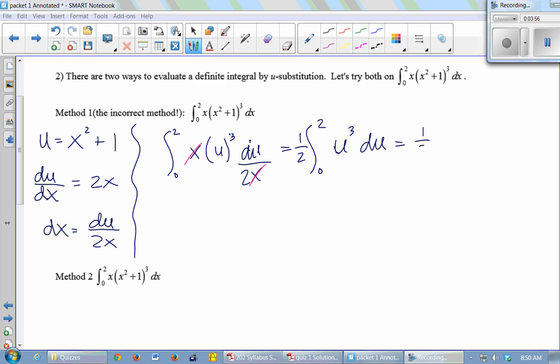So this is going to be 1/2 times, what's the antiderivative of u³? Yeah, u⁴ over 4. And then we're going to evaluate that from 0 to 2. From x equals 0 to x equals 2. So I can't plug those into the u because those are x values. You plug them in as x's. So I have to do one more step and replace the u with what it equals. So this is going to be 1/2 times (x² + 1)⁴ over 4. Now evaluated from 0 to 2. Now it's correct.